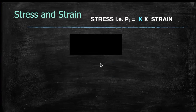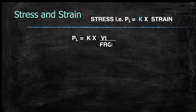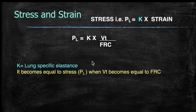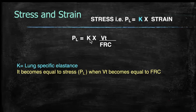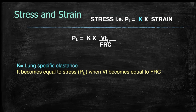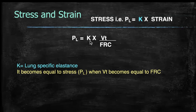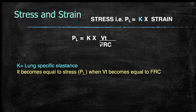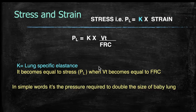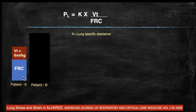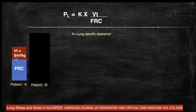Stress = k × strain, and strain = VT / FRC. K is the lung-specific elastance, which equals stress when VT equals FRC. The lung-specific elastance is essentially the pressure required to double the size of the baby lung. For example, in Patient A ventilated at the recommended safe tidal volume of 6 ml/kg at a certain FRC, the strain is calculated accordingly.